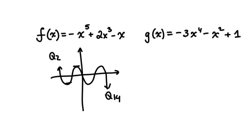It has a maximum of 5 x-intercepts, and the end behavior follows the end behavior of a linear function with a negative slope.